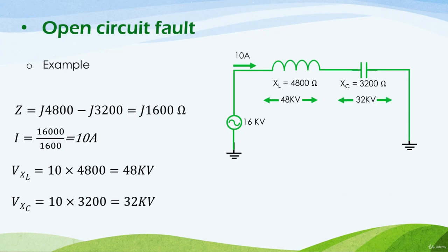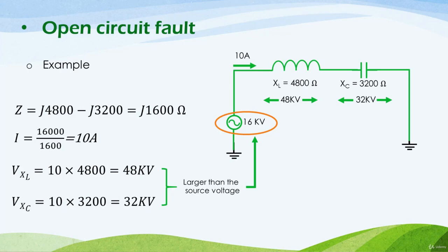The problem is that the voltage across each element is larger than the source voltage. For example, the voltage across the inductor is 48 kV, which is three times the source voltage. The electric circuit components are designed to withstand the source voltage, not this larger voltage across each element. This produces damage to different components like the breakdown of conductor insulation. This example shares one key property with the open circuit fault condition: both have an inductor and a capacitor in series with large impedance, which produces a great voltage across each component causing failure in the system.